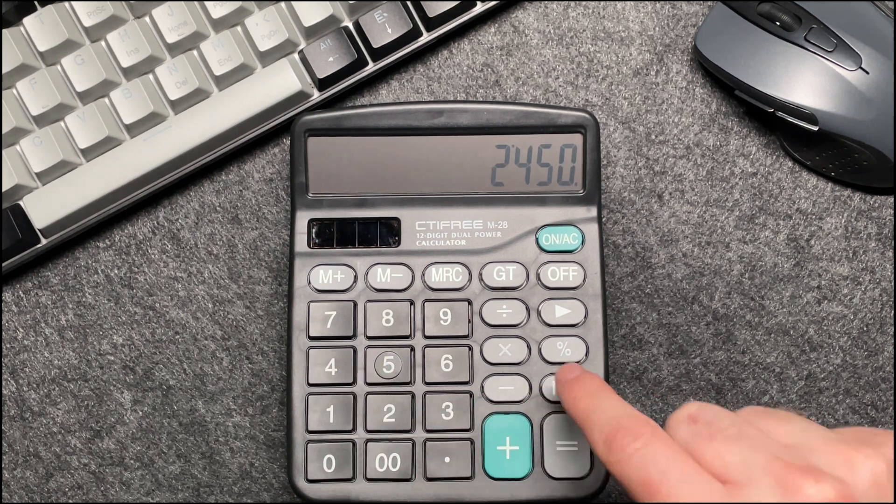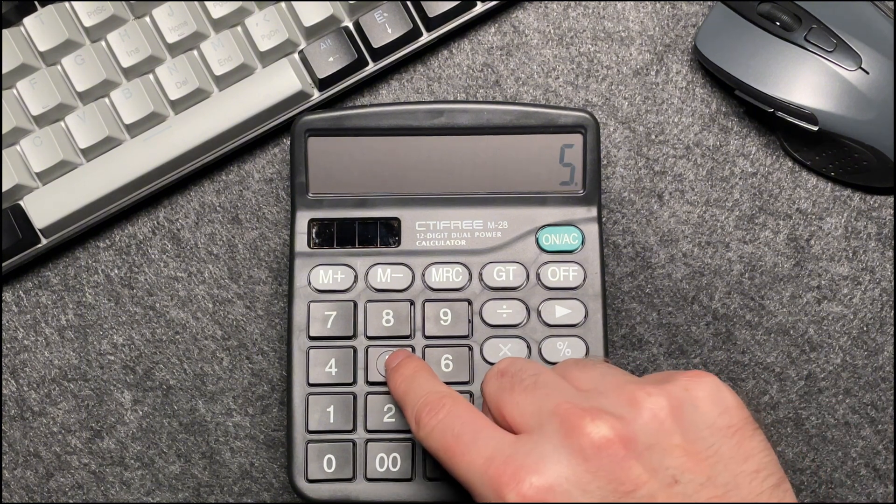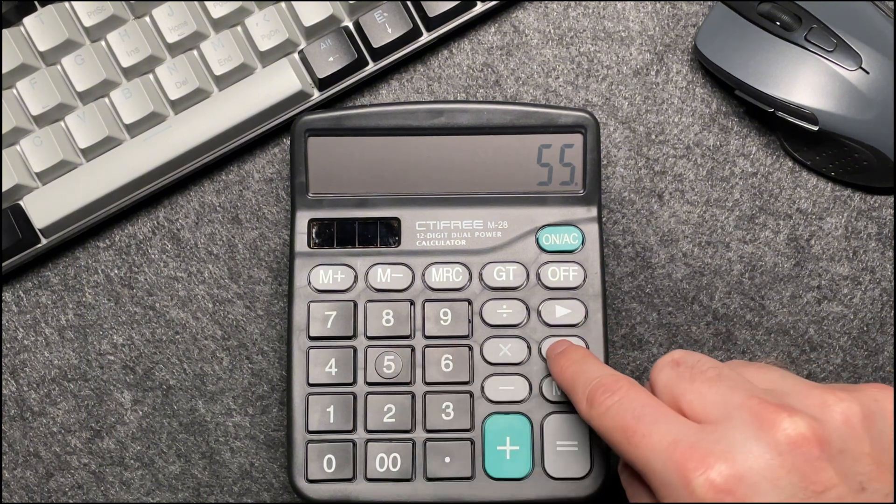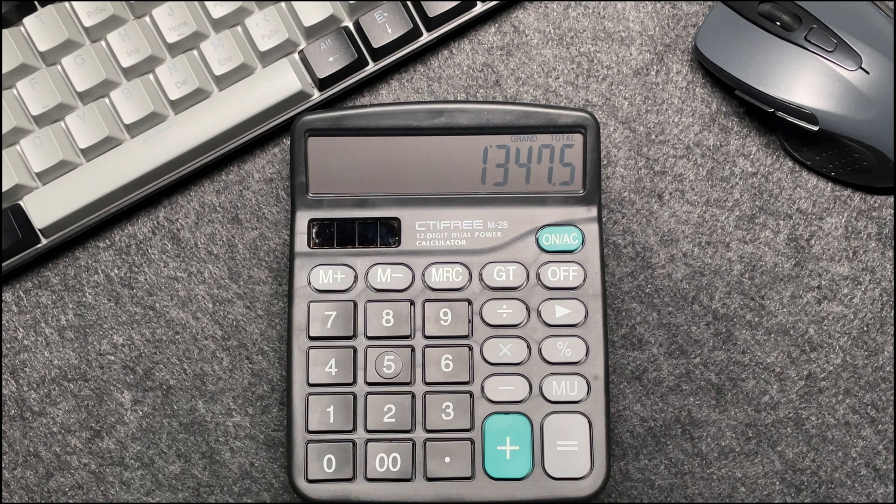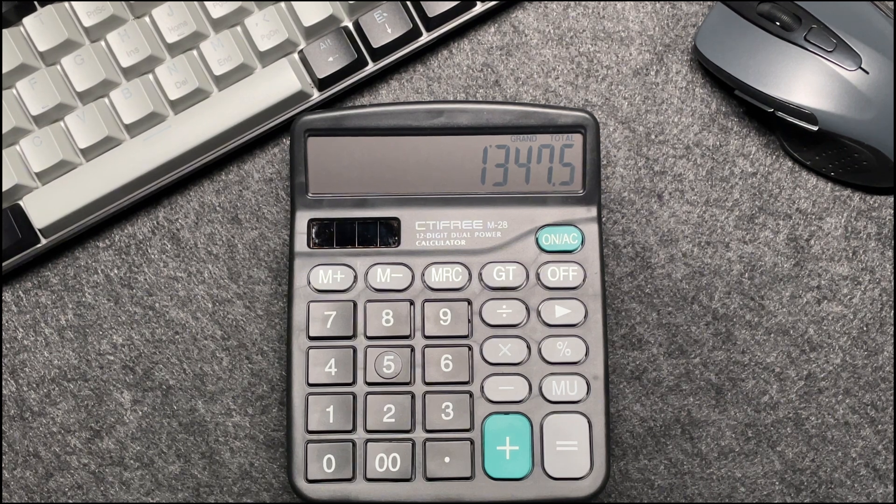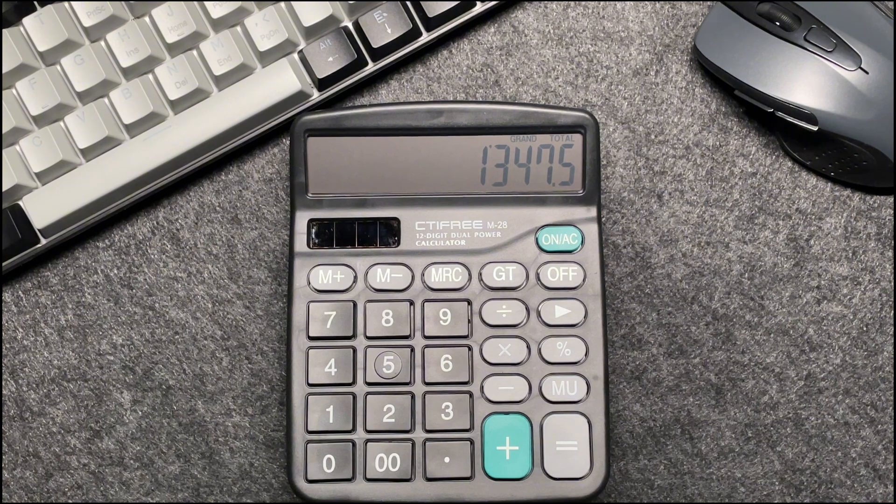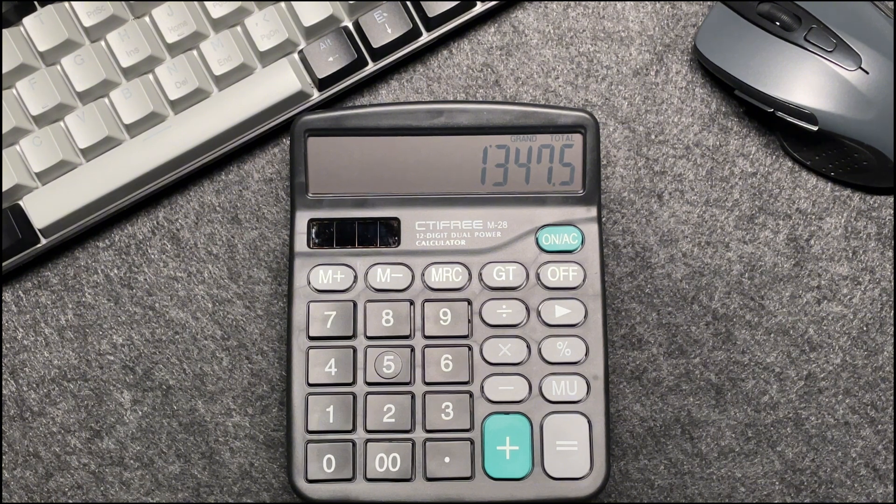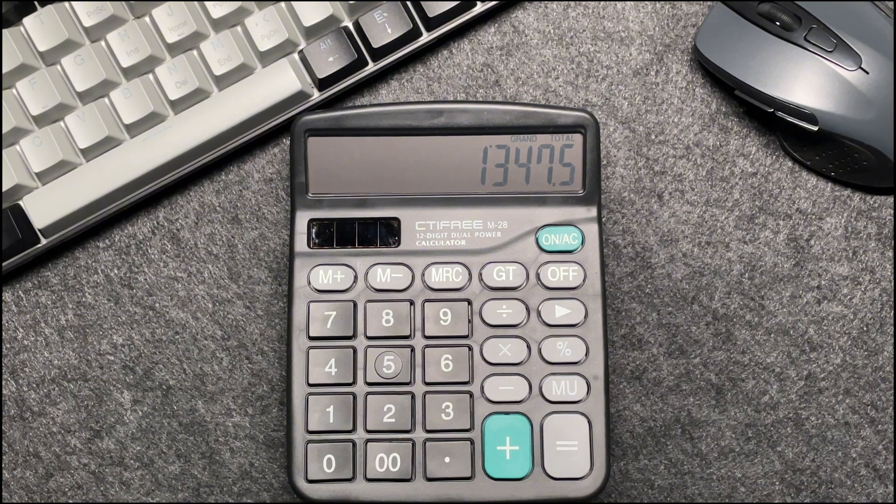Press the multiply button, and multiply by 55. Press the percentage button, and after a 45% off, the final price comes out to be $1,347.50. This quick method saves you time and ensures accuracy.